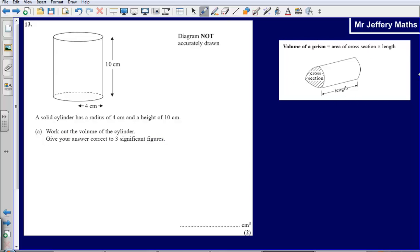Using this formula given to us in the formula page right at the beginning of the paper, a cylinder is a prism, so we take the area of the cross section and multiply it by the length.